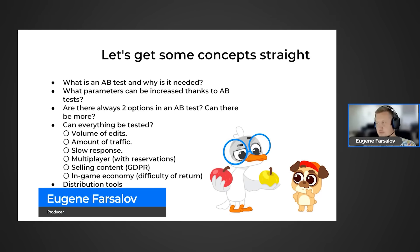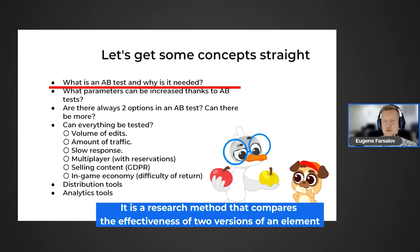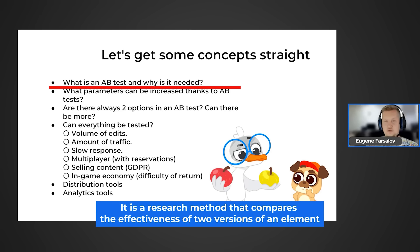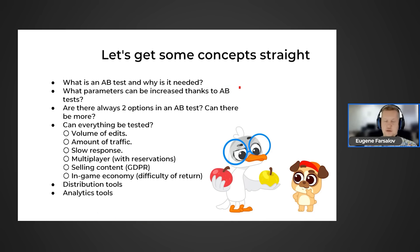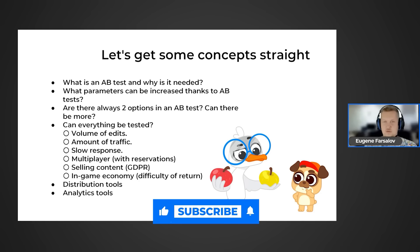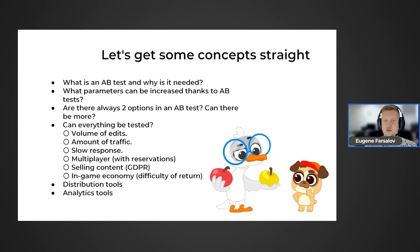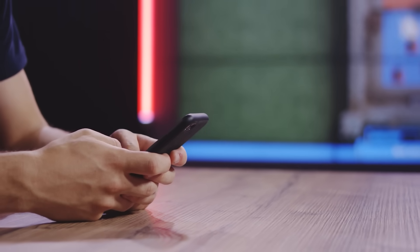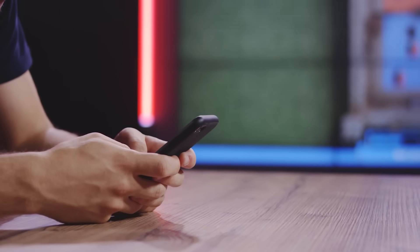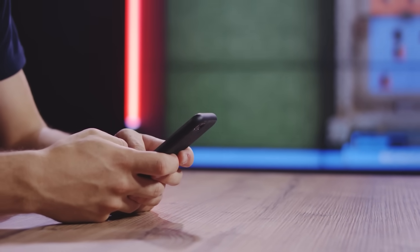What is A-B testing and why do we need it? A-B testing is a tool in development that allows you to test a hypothesis to see whether it's successful or not. Most beginners do it like this: they simply add their change to the game, release it in the store, and then watch to see if any parameter that the change was supposed to affect goes up — whether people started playing more or buying more in-game items.